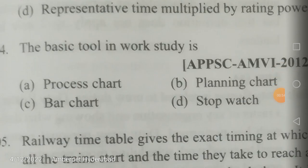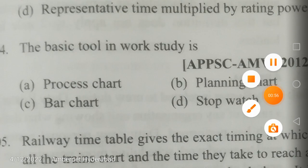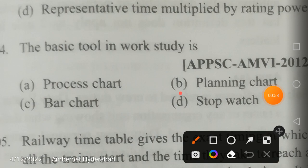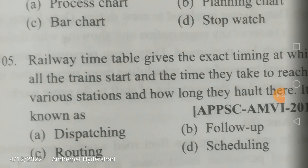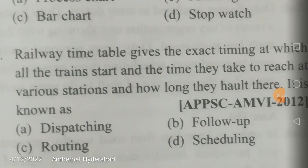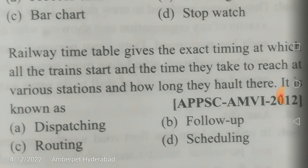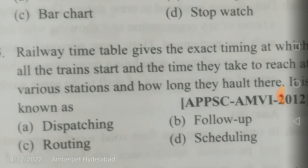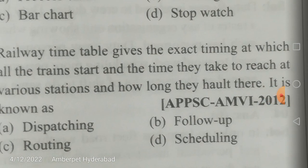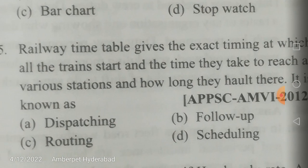The basic tool for work study is a stopwatch. A railway timetable gives the exact time at which all trains start, the time they take to reach various stations, and how long they halt there.